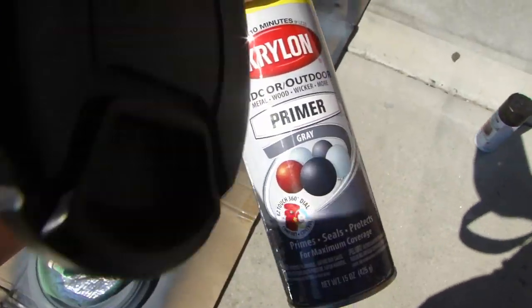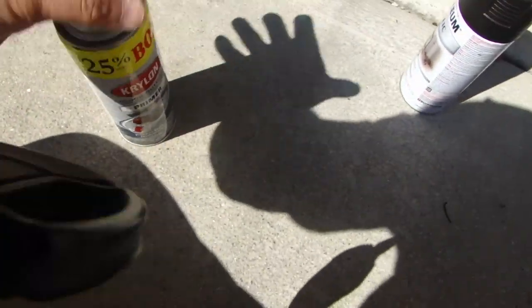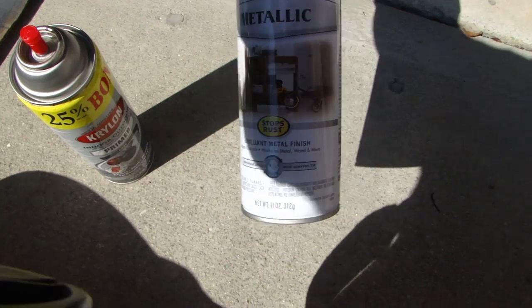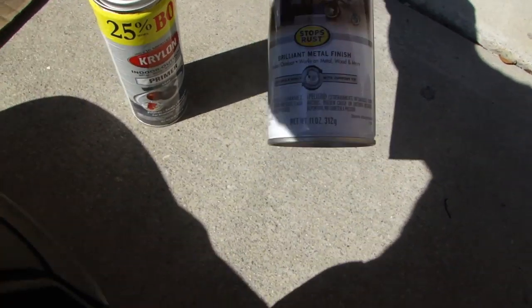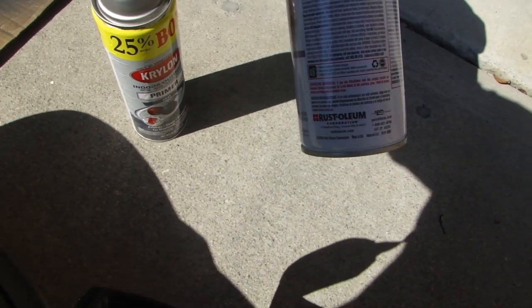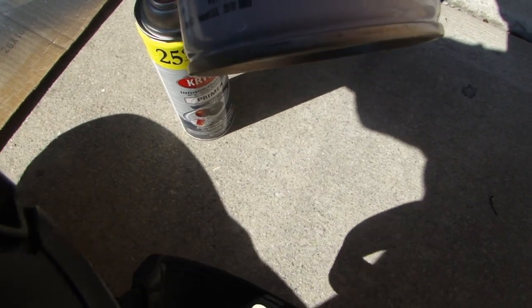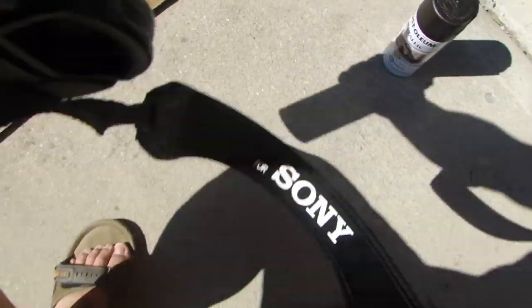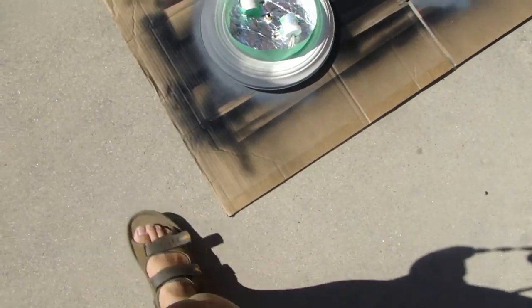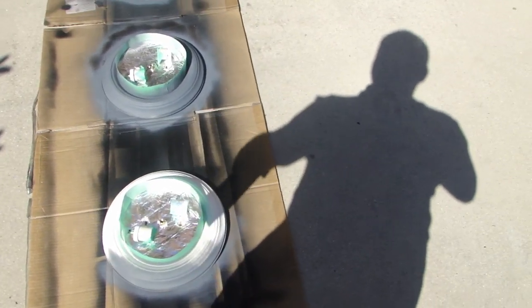So this is the Acrylon primer and then I also got this Rust-Oleum. This is a metallic rubbed bronze color. And then after I prime this, I'm going to put on the base coat, then I'm going to follow by a clear coat which makes it much more durable.